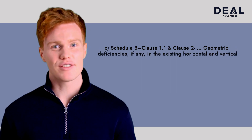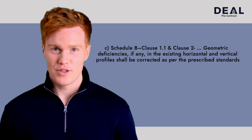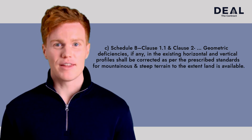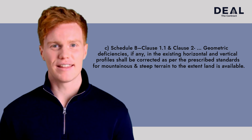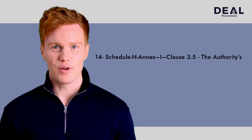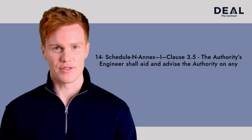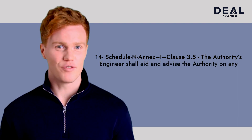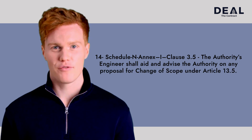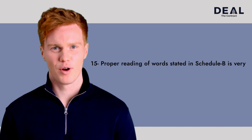Geometric deficiencies, if any, in the existing horizontal and vertical profiles shall be corrected as per the prescribed standards for mountainous and steep terrain, to the extent land is available. Schedule NNX, Clause 3.5 states that the authority's engineer shall aid and advise the authority on any proposal for change of scope under Article 13.5.